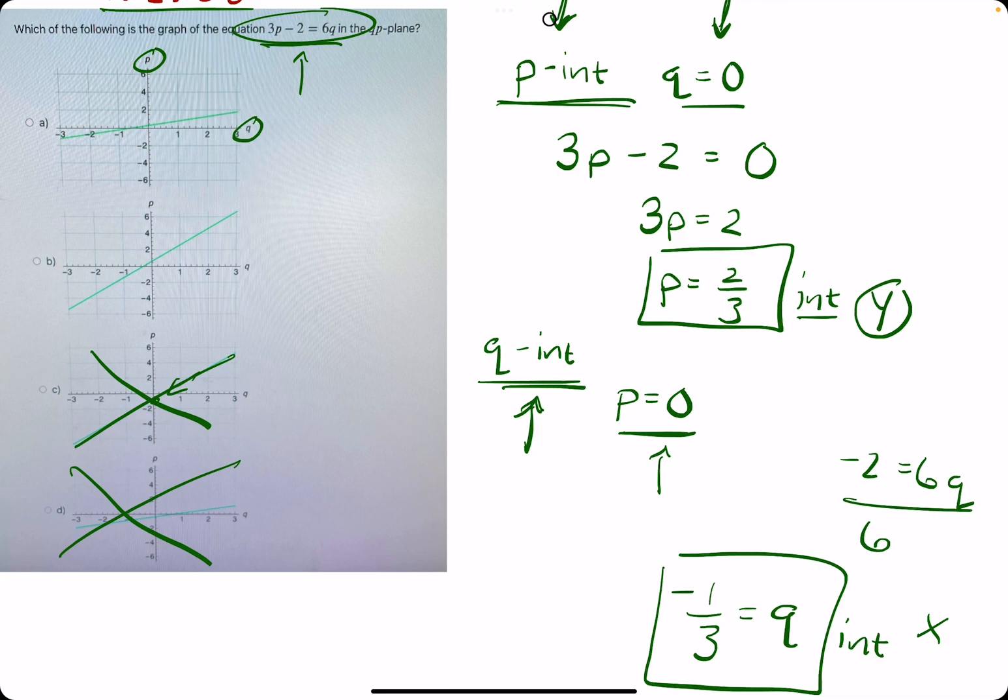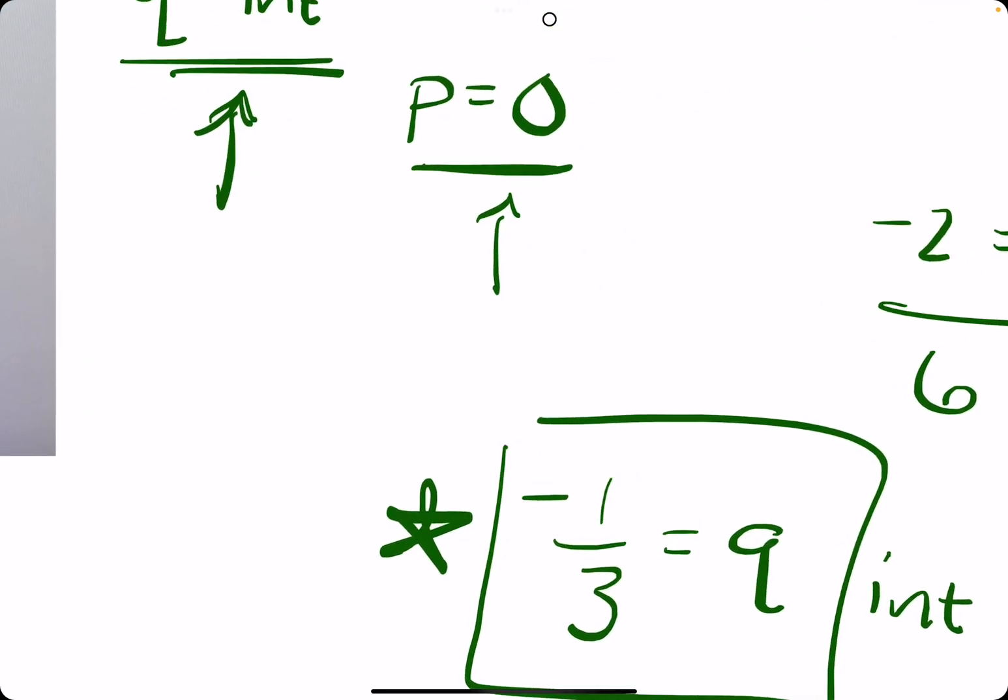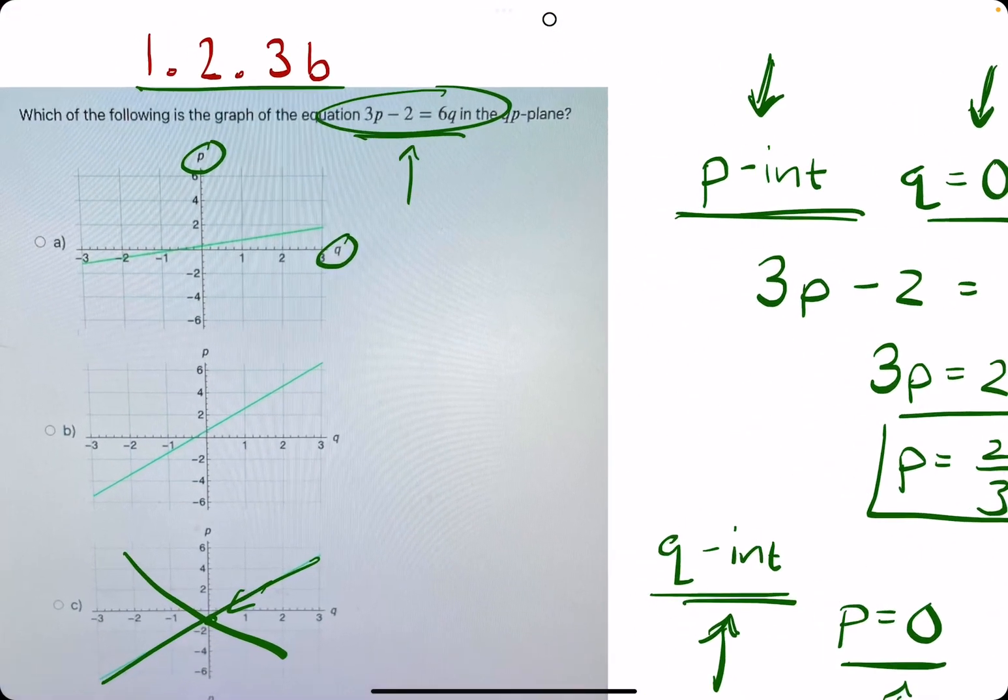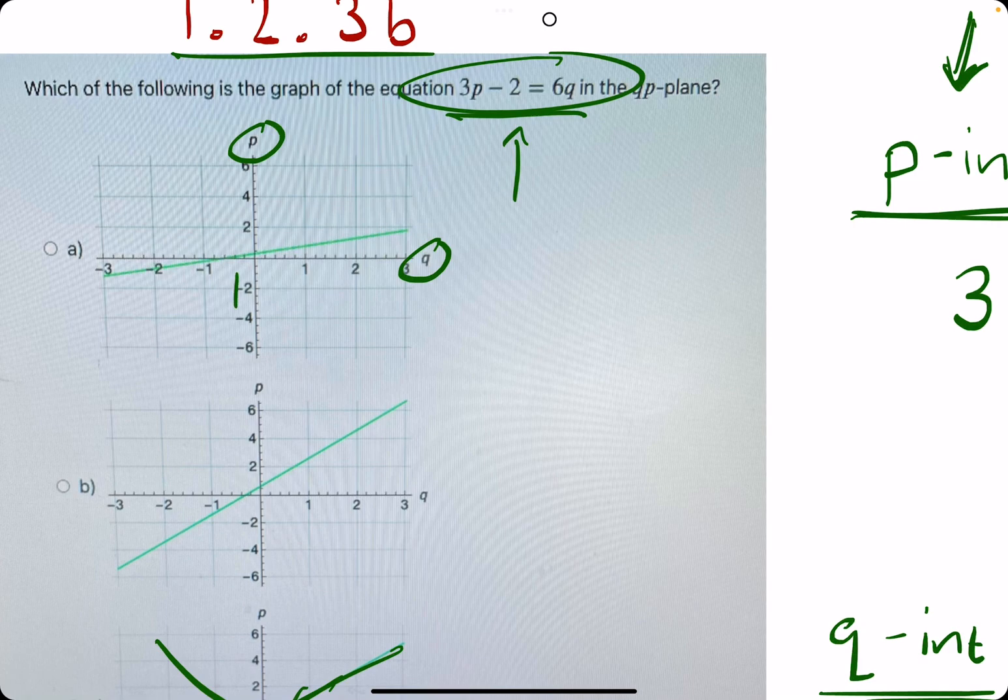Looking at these remaining options, the scale is actually pretty important here. What helped me most is looking for q equals negative 1/3. When we look here,